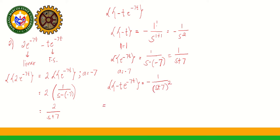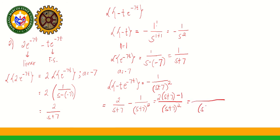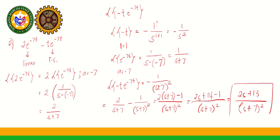Combining both terms: 2 over (S + 7) minus 1 over (S + 7)². Taking the LCD of (S + 7)², this becomes 2(S + 7) − 1 over (S + 7)², which simplifies to 2S + 14 − 1 over (S + 7)², giving the final answer: (2S + 13) over (S + 7)². That is Example 2 of the first shifting property.